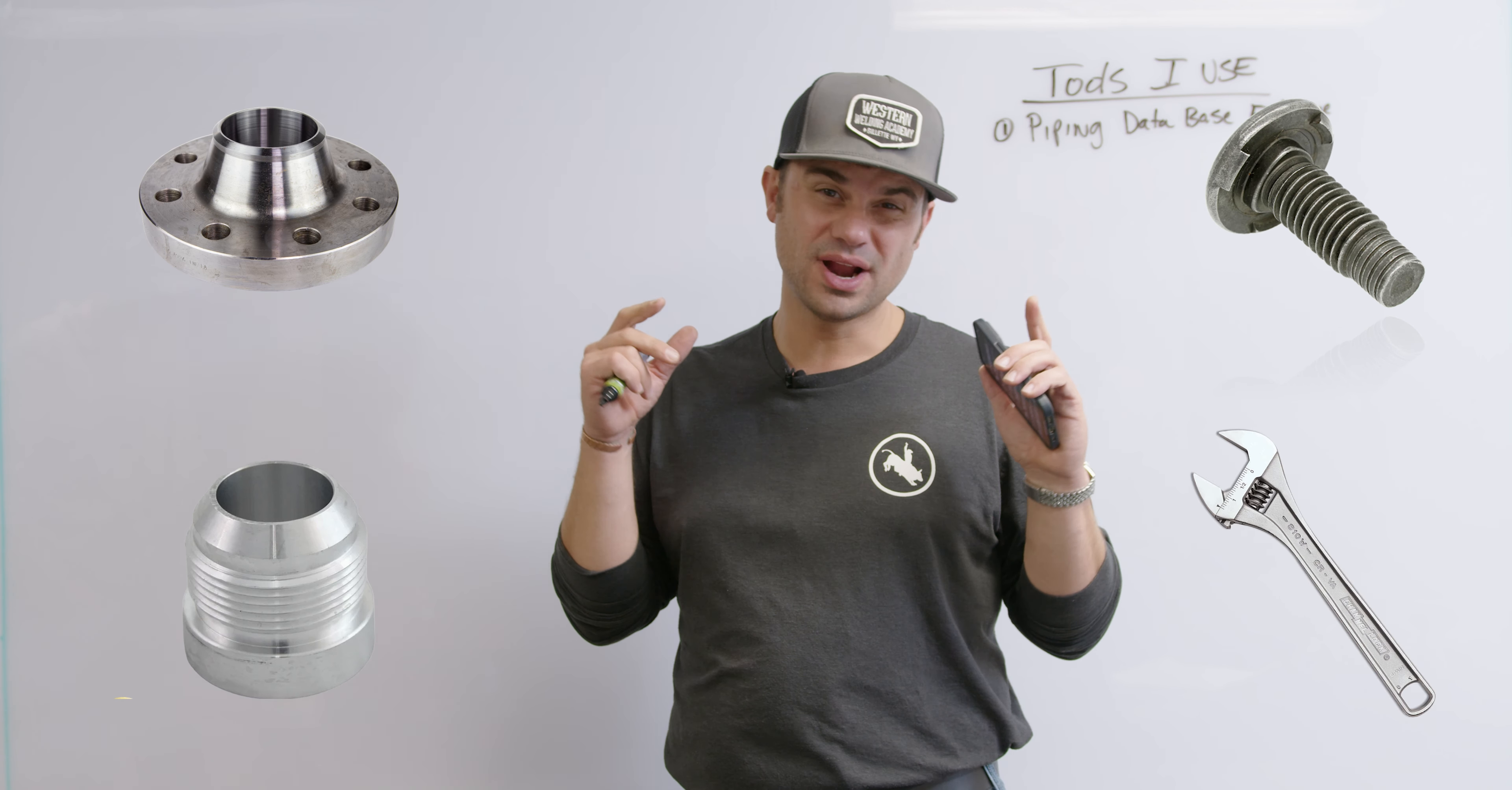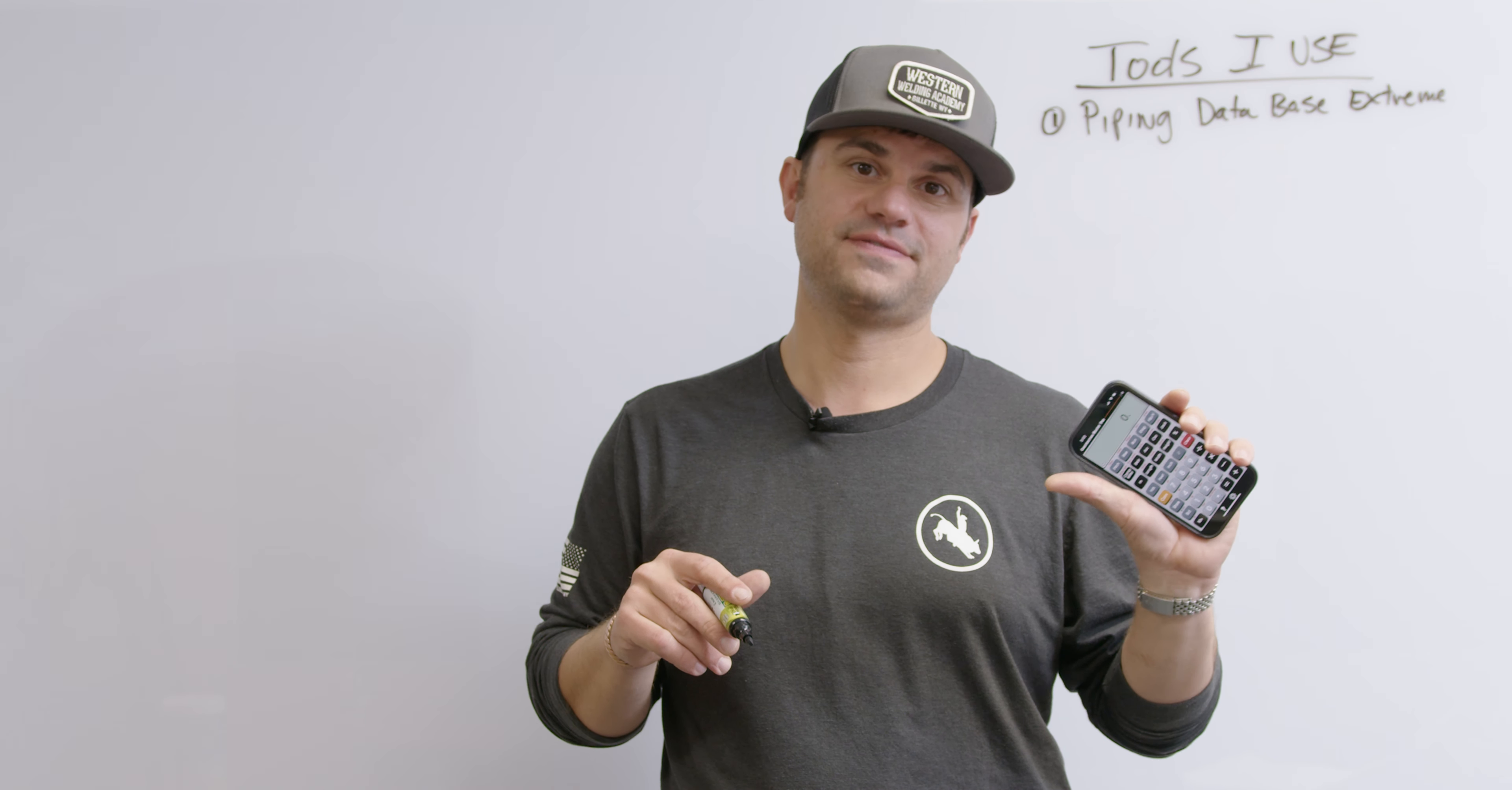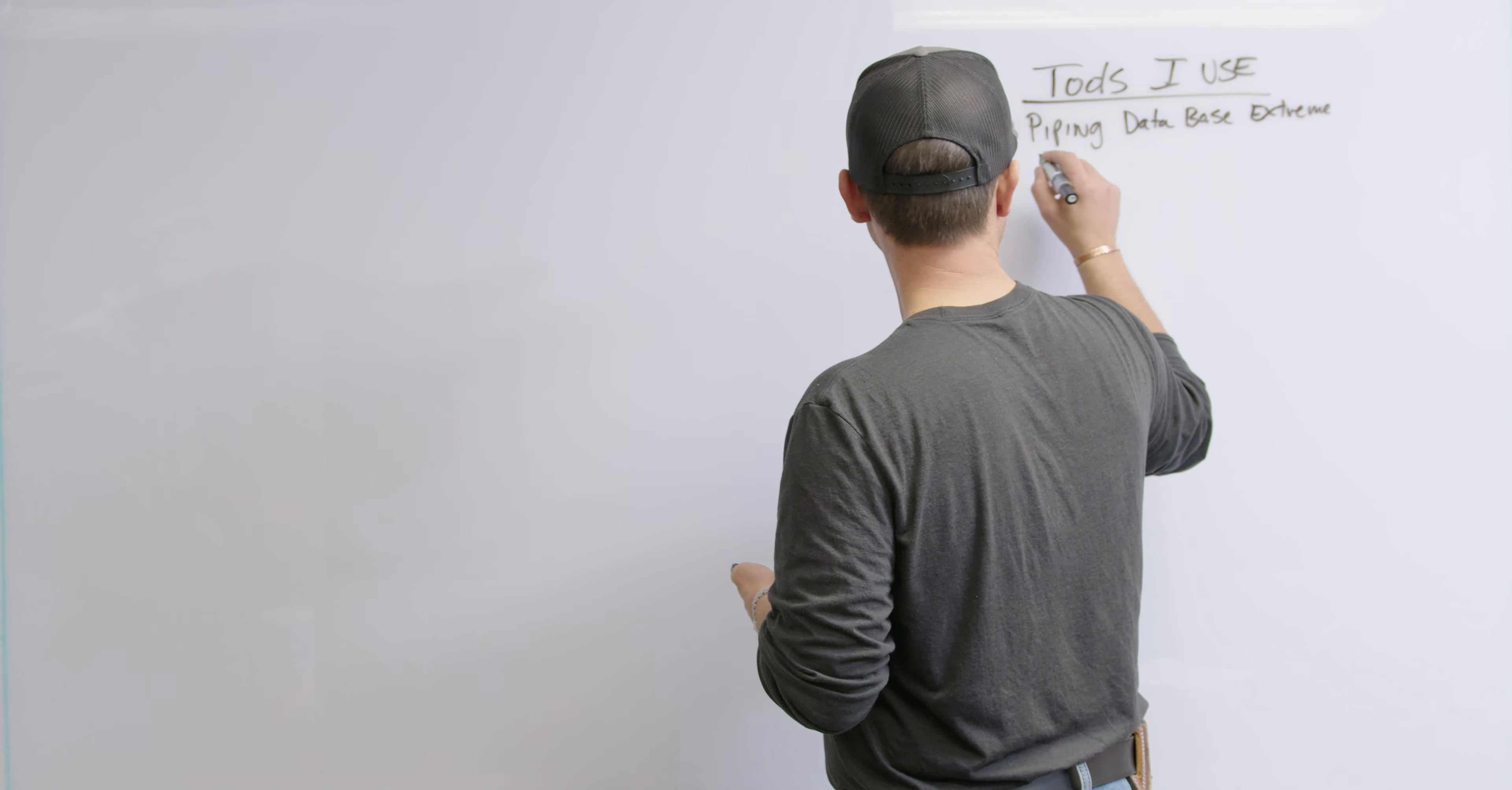The second biggest tool that I use is the Construction Master Pro Calculator. This is a calculator that's going to do fractions and it's got a bunch of stuff pre-built into it and a whole bunch of shortcuts that's going to make your life as a pipe fitter and as a welder super easy.